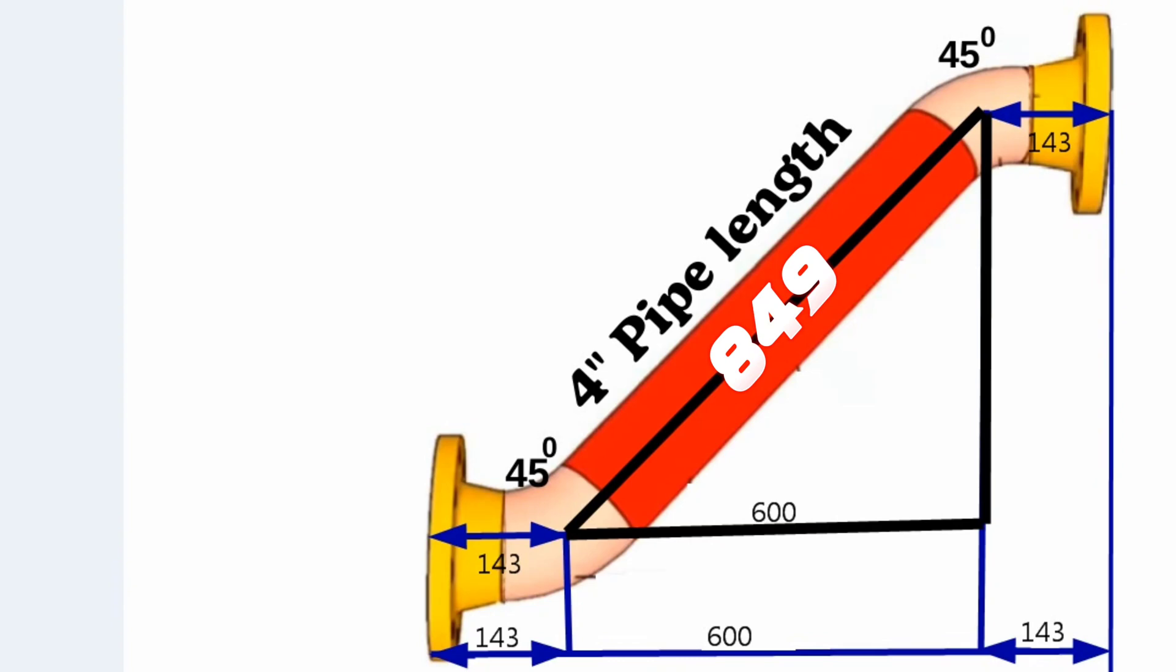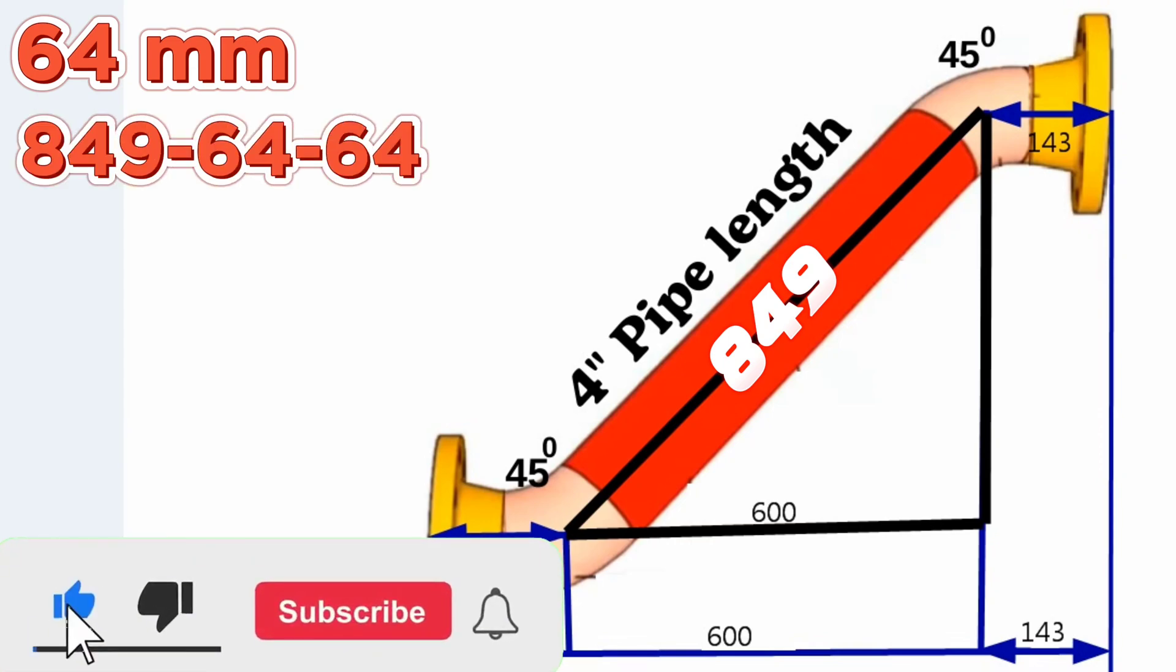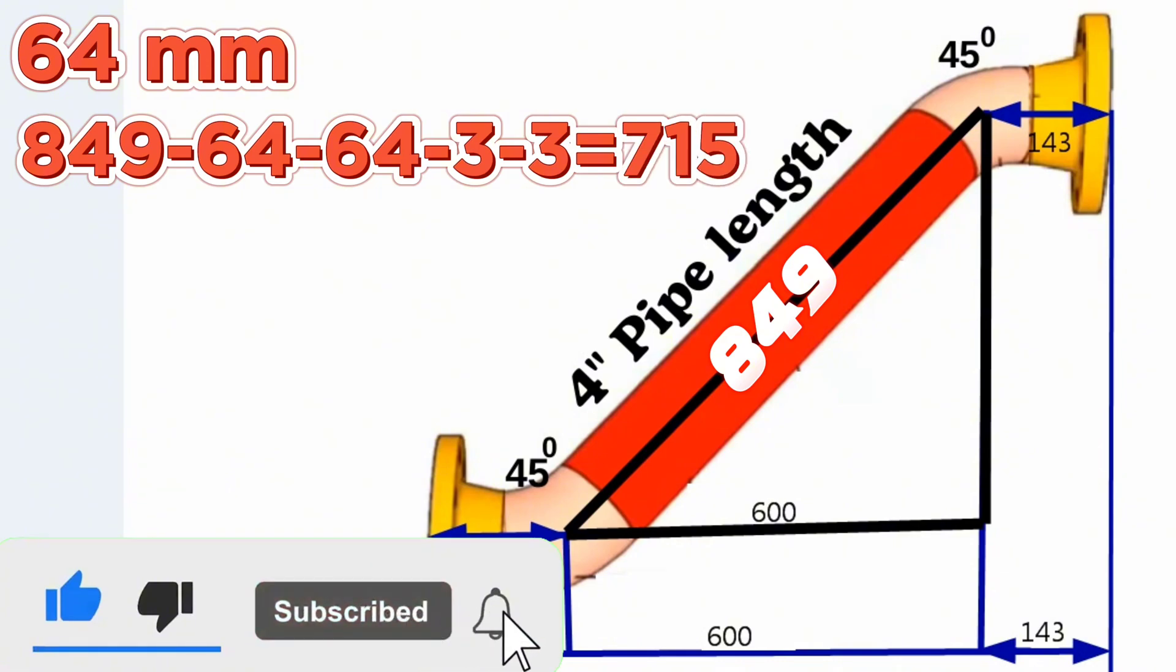We know the center to end of the 45-degree 4-inch butt weld elbow is 64 millimeters. Then 849 minus 64 minus 64 minus 3 minus 3 equals 715 millimeters.